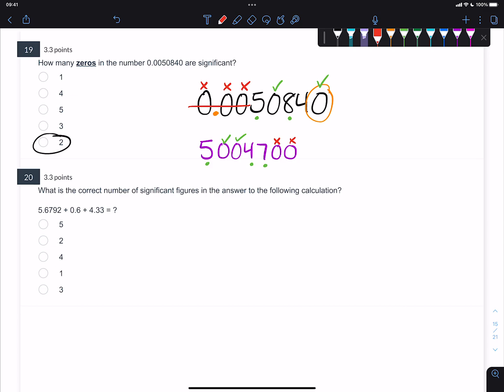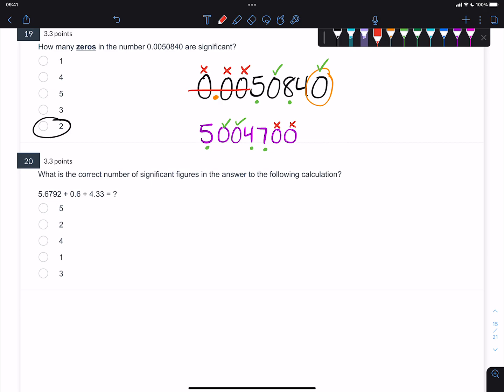For number two, it says what is the correct number of sig figs in the answer for the following calculation. You are going to have to put this into your calculator. I recommend that you rewrite them stacked up with decimal points aligned. There are three numbers, which means there are going to be three decimal points in this example. So let's write the first number: 5.6792, and then the second one is going to be 0.6, and the third one is going to be 4.33. Add them all up as normal, so I'm going to do that in my calculator. 5.6792 plus 0.6 plus 4.33 and I get 10.6092.